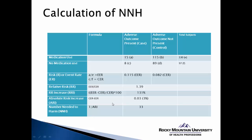The next calculation is the absolute risk increase, or ARI. We take the EER value and subtract the CER value, giving an absolute risk increase of 0.03, or 3%. This can be expressed as either a decimal or a percentage.